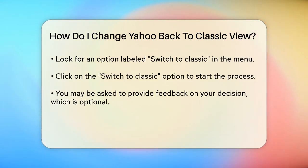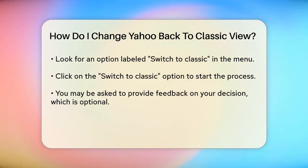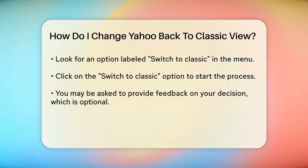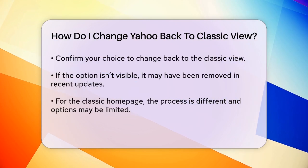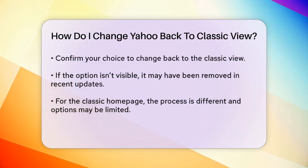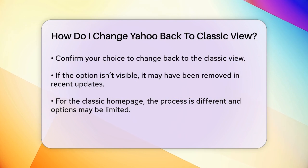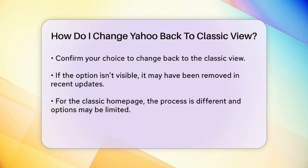After selecting the 'Switch to Classic' option, confirm your choice. This will change your Yahoo Mail interface back to the classic view. Here's a step-by-step summary: log into your Yahoo Mail account, click on the settings option at the top right corner, select 'Switch to Classic' from the drop-down menu, optionally provide feedback, then confirm the switch.